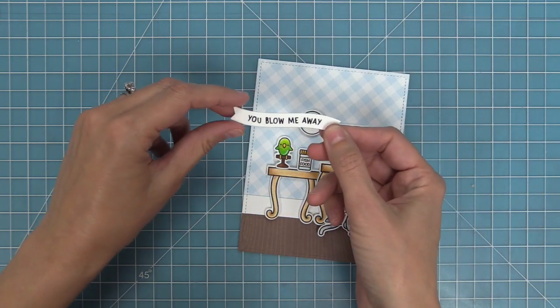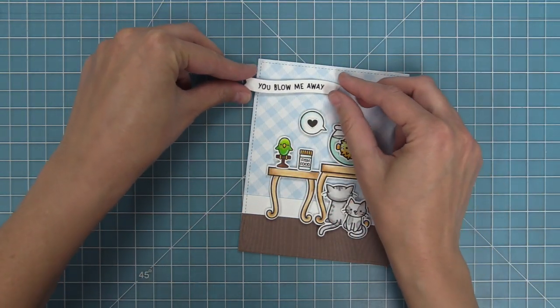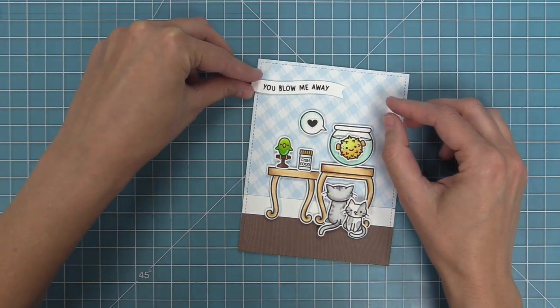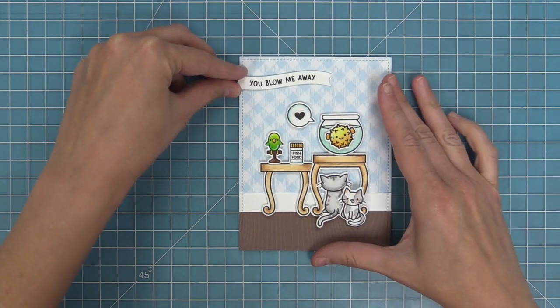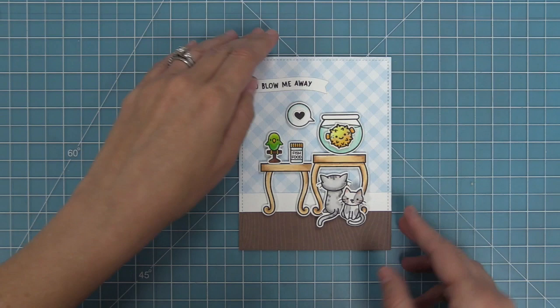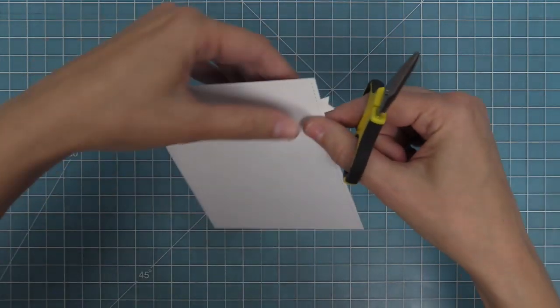I'm going to add some tape runner to the sentiment and then attach that to the card and then we can trim off any of the excess. I love the idea of the sentiment 'You Blow Me Away' kind of looking like it's coming from the side in that curve—it's just so cute and so awesome.